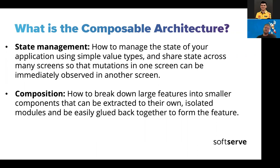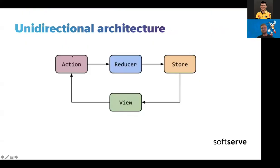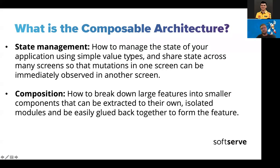As you remember from the previous slide, with unidirectional architecture, first of all it's about state management. It's much easier to work with this because when only one state changes, we can easily notify the whole application about it, and we don't need to send any callbacks back to another layer.